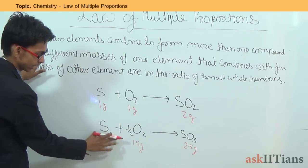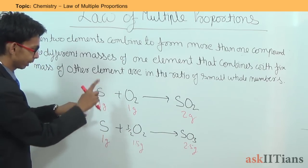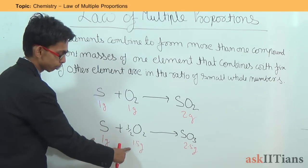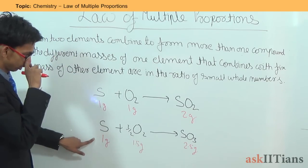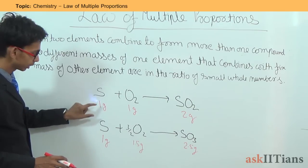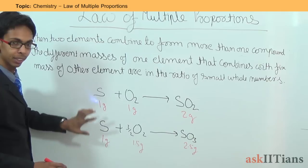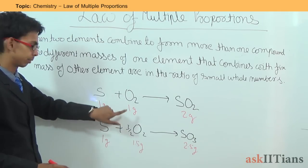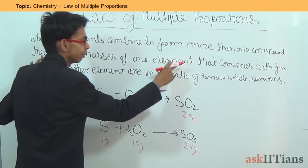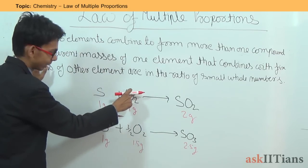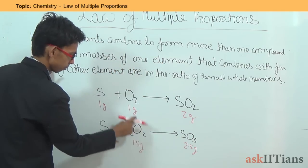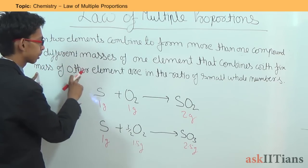Looking at these two reactions: in the first one, 1 gram of sulfur reacts with 1 gram of oxygen. In the second one, 1 gram of sulfur reacts with 1.5 grams of oxygen. The mass of sulfur is constant in both reactions, while the mass of oxygen differs — it is 1 gram in the first and 1.5 grams in the second.